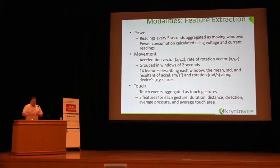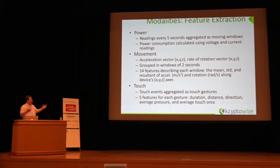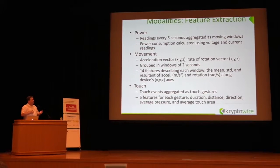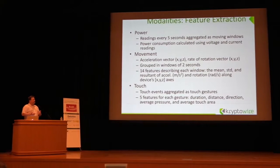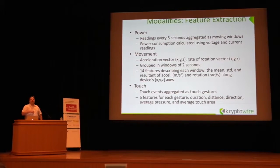In terms of modalities, we perform feature extraction. For power, we have readings every five seconds aggregated as moving windows, and the calculation of power uses voltage and current from drivers provided by the phone. For movement, we use acceleration vector and rate of rotation grouped in two-second windows — 14 features per window, including mean and standard deviation. The way that you hold and move the phone to your ear defines you in a rather unique fashion.